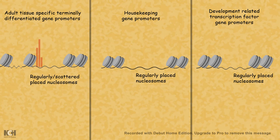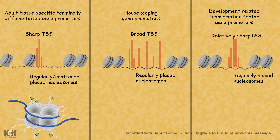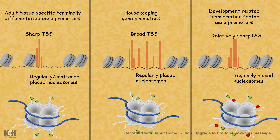The transcription start site — or the frequency of transcription start events — is very sharp in terminally differentiated gene promoters, more broad in housekeeping gene promoters, and relatively sharper than housekeeping in developmentally important genes. In terms of activatory and inhibitory marks, terminally differentiated and housekeeping gene promoters mostly carry activatory marks, whereas developmentally related gene promoters have both activatory and inhibitory marks, existing in a poised state ready for either differentiation or self-renewal.